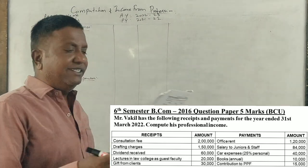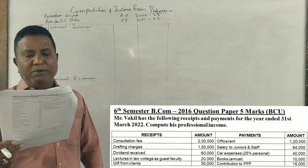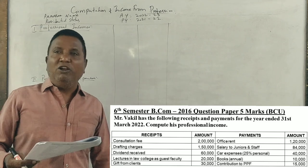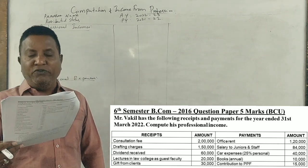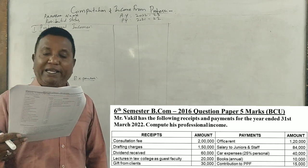Hi guys, this is a 2016 question paper worth 5 marks. Mr. Vakil is a lawyer with the following receipts and payments for the year ending March 2022. We need to compute his professional income.